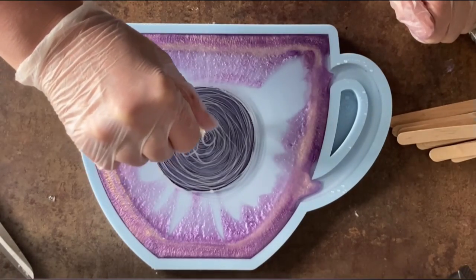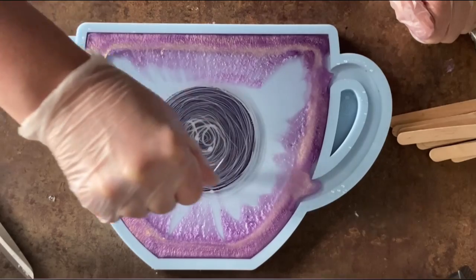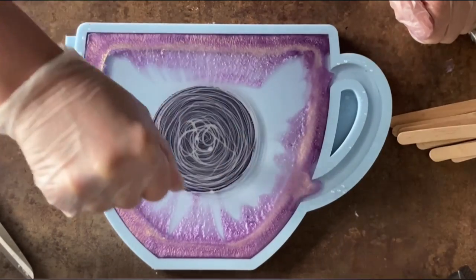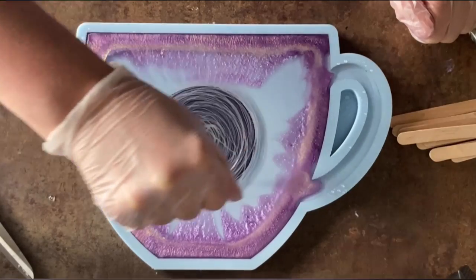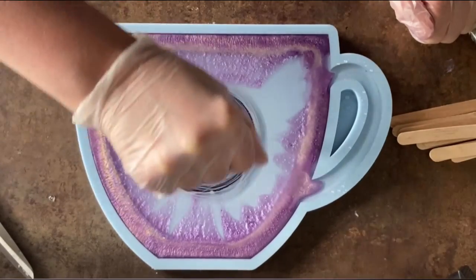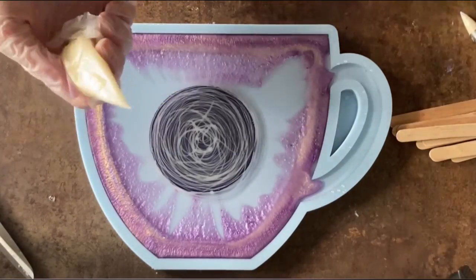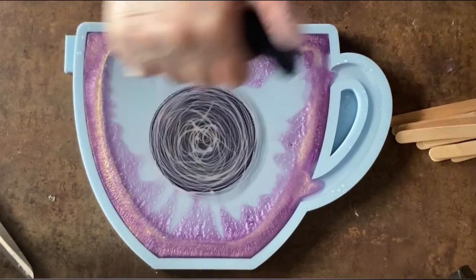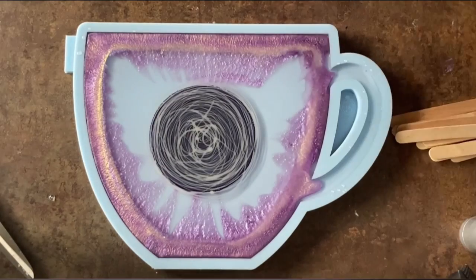Yeah, the mold I'm using, the cup tray mold from Molds and Shapes - so if you're interested in this mold, please check out my description box. And if you use the promo code PT5, you get 5% discount. So this is my circles or my spiral done.